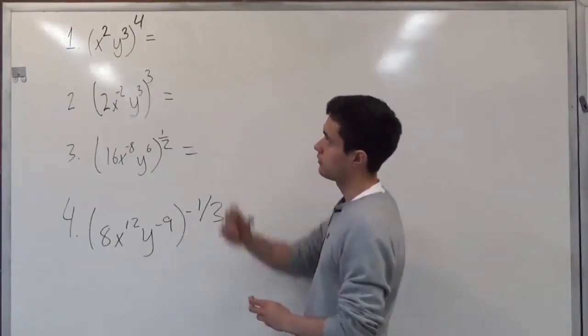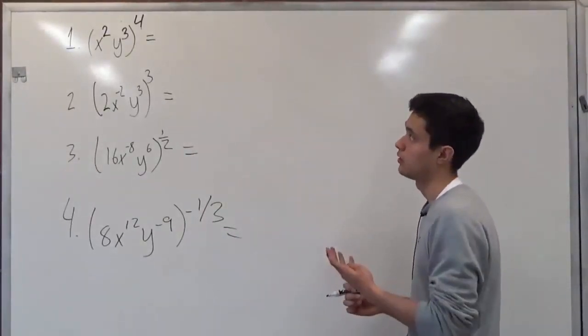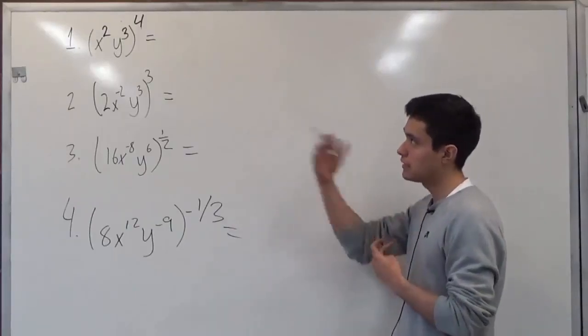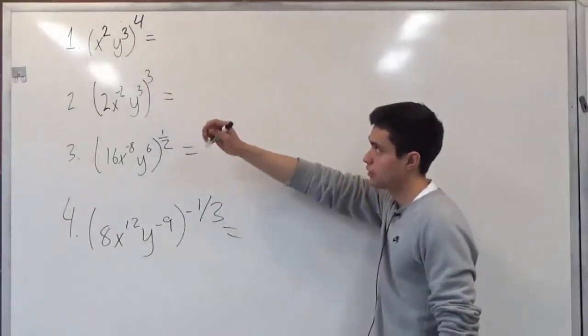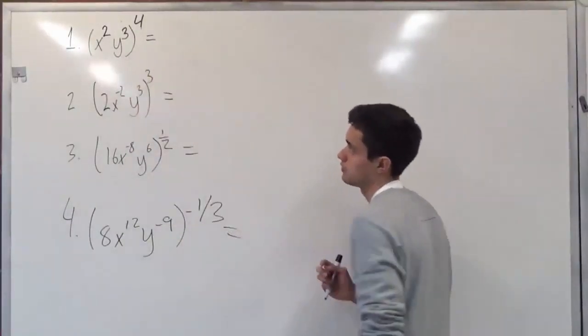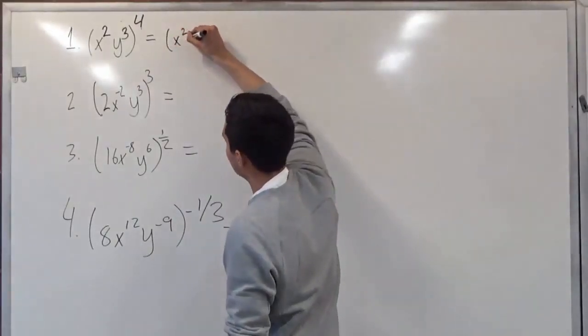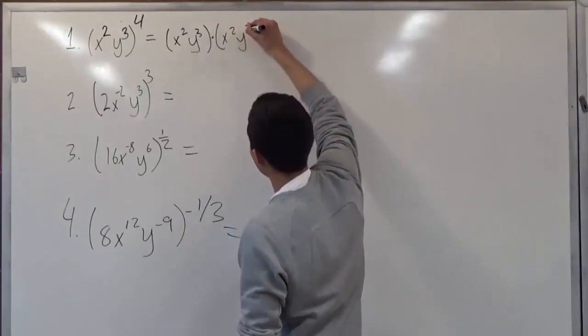What we see here is x squared times y to the third to the fourth power. So originally, what this basically means is that we're multiplying this part four times. So initially, it could look like this, times x squared y to the third.